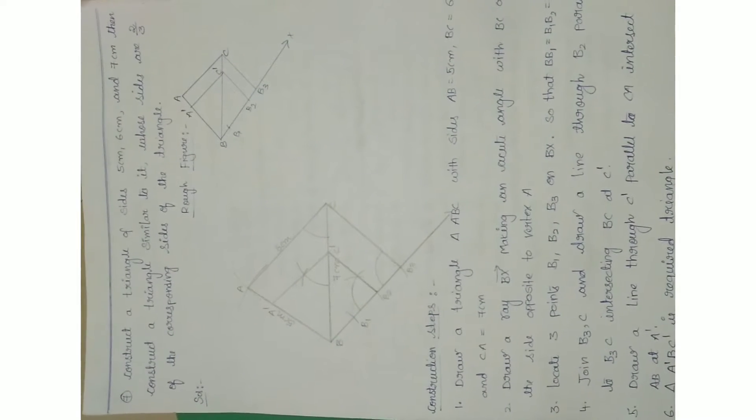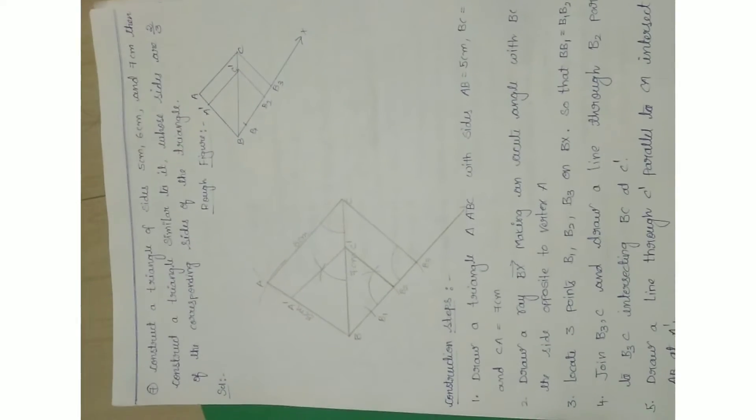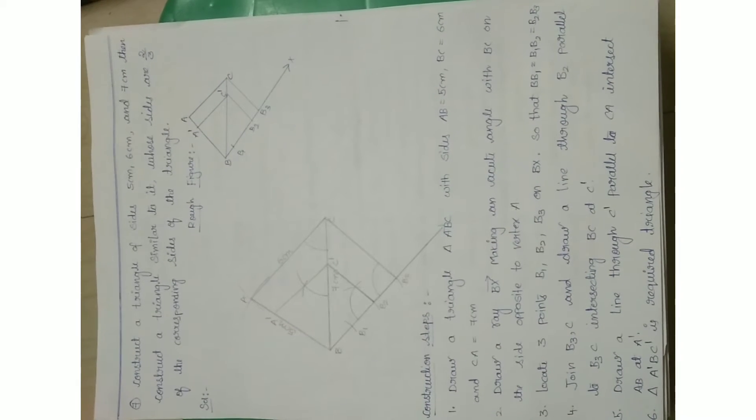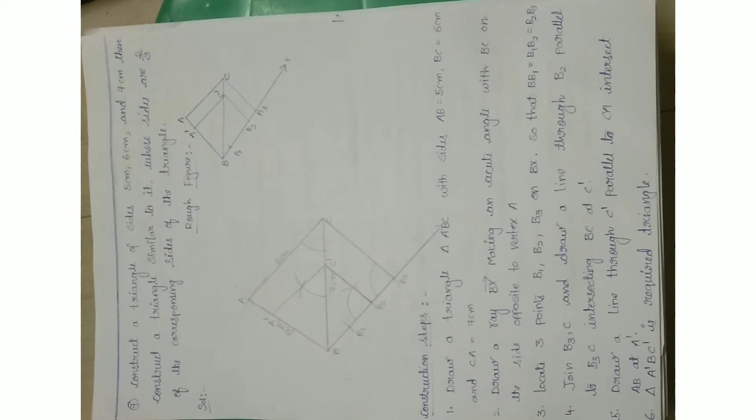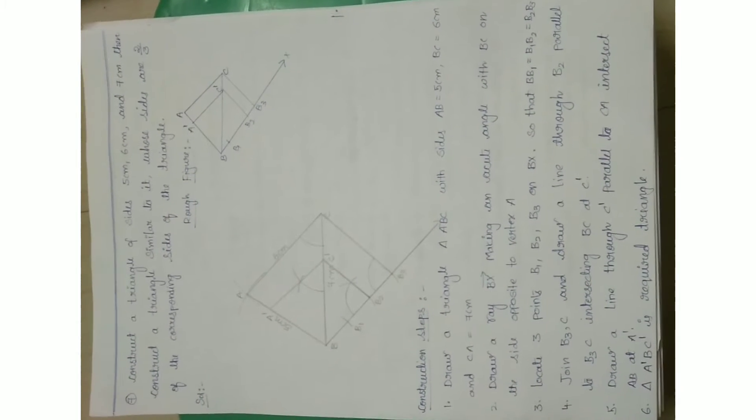From chapter eight — similar triangles: construct a triangle of sides 5 cm, 6 cm, and 7 cm, then construct a triangle similar to it whose sides are 2/3 of the corresponding sides. You can see the rough diagram, construction, and steps of construction. Do this carefully to get 8 out of 8.